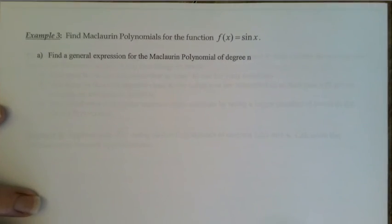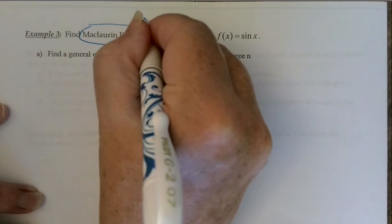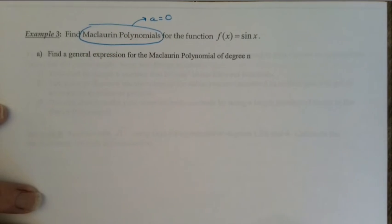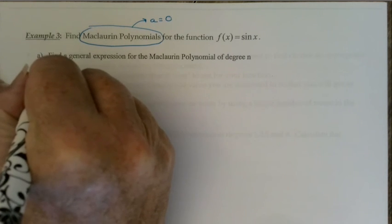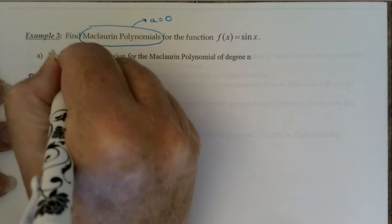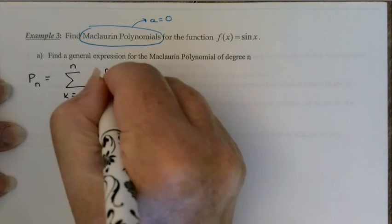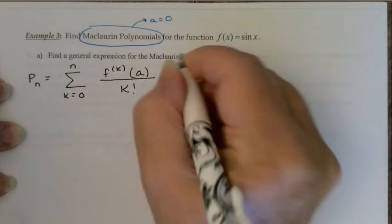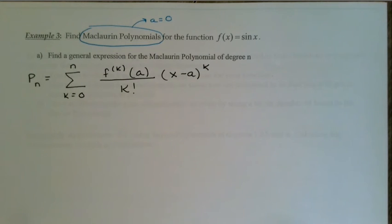Let's go ahead and try another one. We've done a log, we've done an exponential — let's do a trig function. This time I'd like to find Maclaurin polynomials, and notice as soon as I say Maclaurin polynomials, that automatically tells you a = 0. We're going to do it for f(x) = sin(x). I always start with p_n equals the sum as k goes from 0 to n of the kth derivative evaluated at a, divided by k factorial, times (x minus a) to the k.